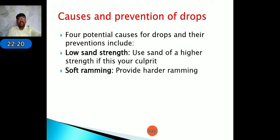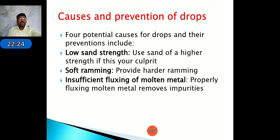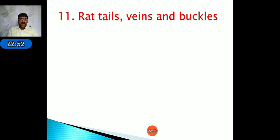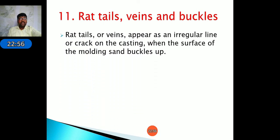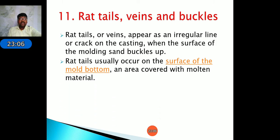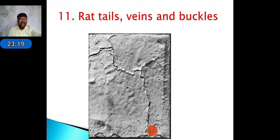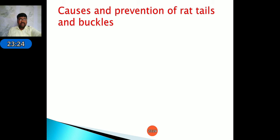Additional causes of drops: insufficient fluxing of molten metal — proper fluxing removes impurities during melting; insufficient reinforcement of sand projections in the cope — reinforce sand projections using nails or gaggers to fix the issue. Rat tails, veins, and buckles form as irregular lines or cracks on the casting when the molding sand buckles. Rat tails occur at the bottom surface of the casting; buckles are more severe than rat tails.